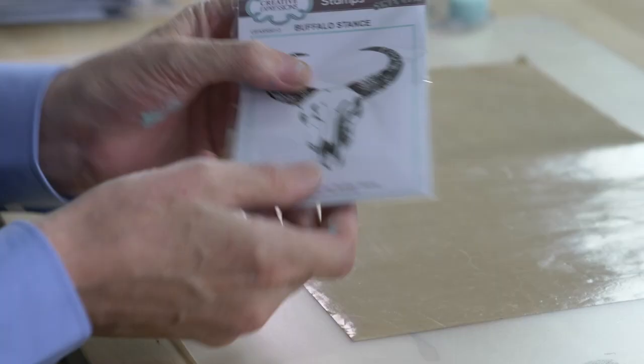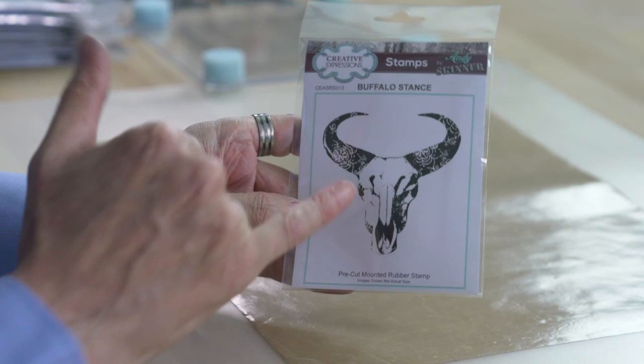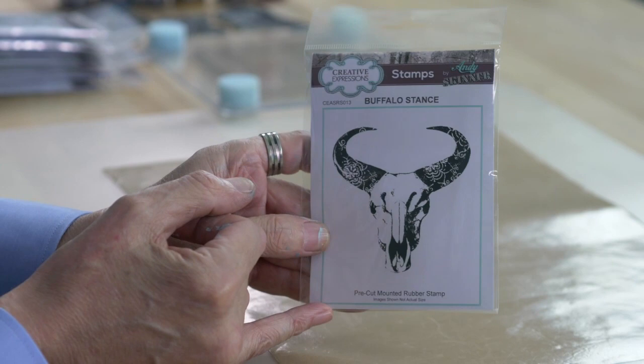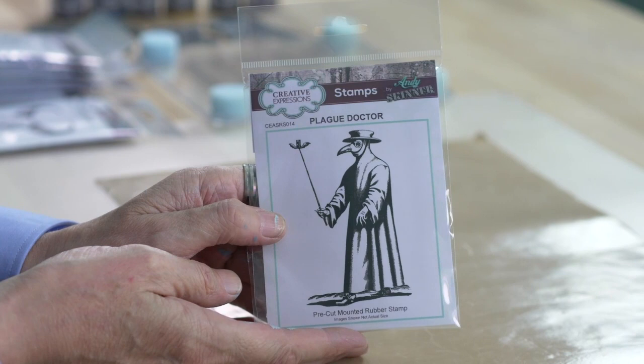We'll start with the first. This one is called Buffalo Stance and you'll see in the horns here, it's actually got flower impressions on the horns. A really cool stamp. The next one is the Plague Doctor, so can be used all year round but great for Halloween.